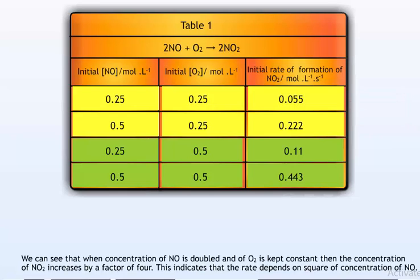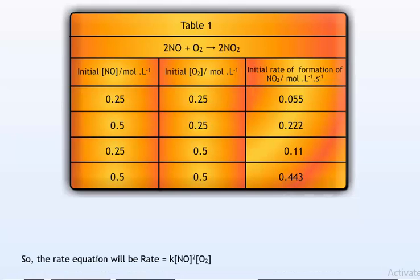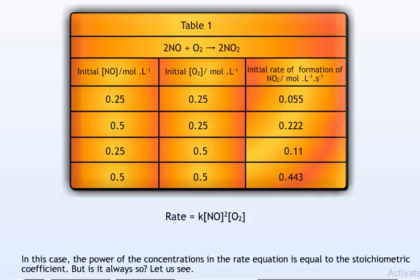This indicates that the rate depends on the square of the concentration of NO. When we keep concentration of NO constant and double the concentration of O2, the rate also gets doubled. So the rate depends on the first power of concentration of O2. The rate equation comes out to be: rate equals K into [NO]² into [O2]. In this case, the power of the concentrations equals the stoichiometric coefficient.